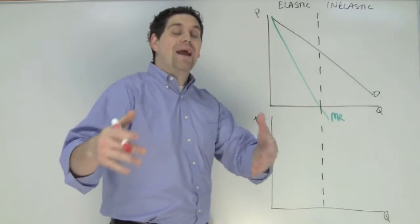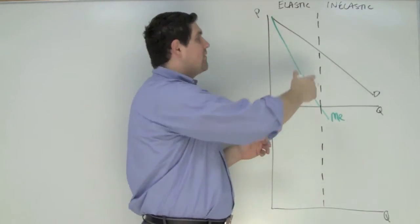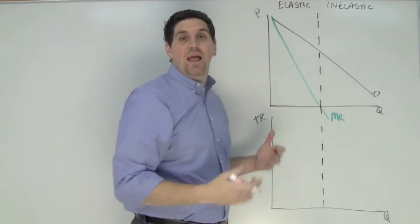To get this you have to go back to unit two for something called the total revenue test. This monopoly is a price maker so to sell another unit they've got to lower the price and the additional revenue is less than that price.